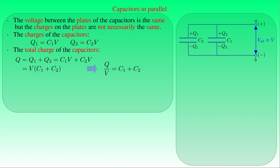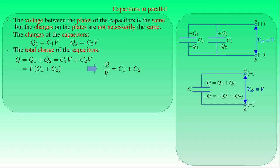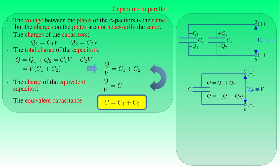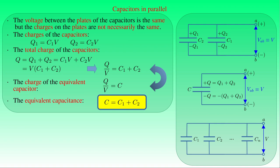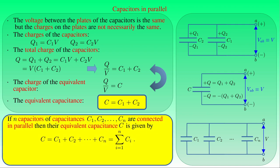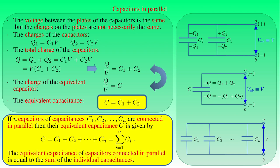This gives the equation Q/V = C₁ + C₂. We can ask what the capacitance C of a single capacitor equivalent to the capacitors of capacitances C₁ and C₂ connected in parallel is, where the total charge Q = Q₁ + Q₂ is stored on its plates when voltage V is applied. For the equivalent capacitor, Q/V = C, and by comparing the two equations we conclude that C equals C₁ + C₂. Generally, if N capacitors of capacitances C₁, C₂, ..., Cₙ are connected in parallel, the equivalent capacitance C is given by C₁ + C₂ + ... + Cₙ, or the sum of Cᵢ from i equals 1 to N. In other words, the equivalent capacitance of capacitors connected in parallel is given by the sum of the individual capacitances.